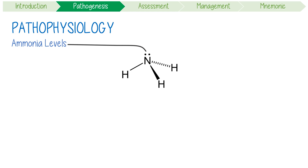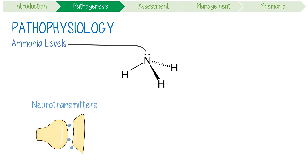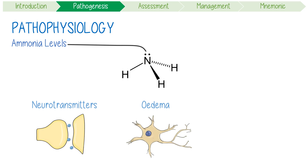Firstly, it disrupts the synthesis of neurotransmitters like dopamine. Secondly, it causes brain edema because astrocytes — the brain cells — absorb it and swell up. Finally, it causes oxidative stress.